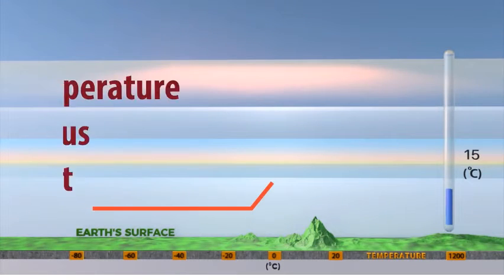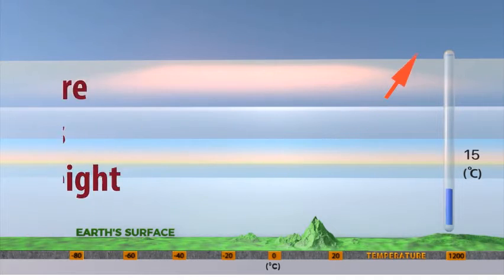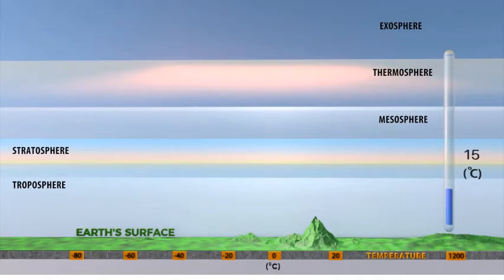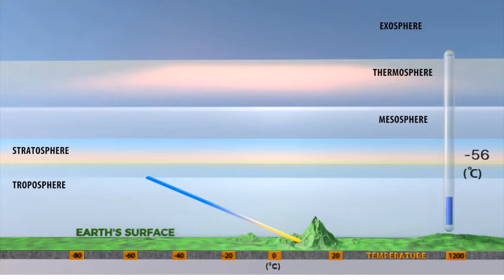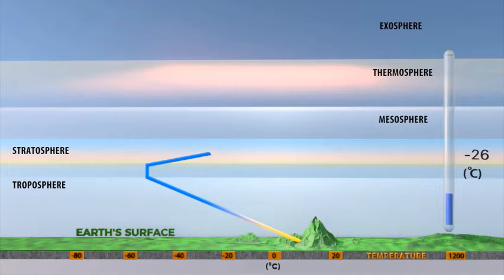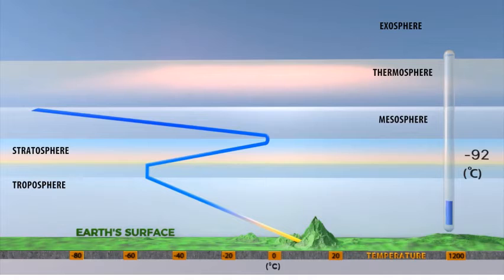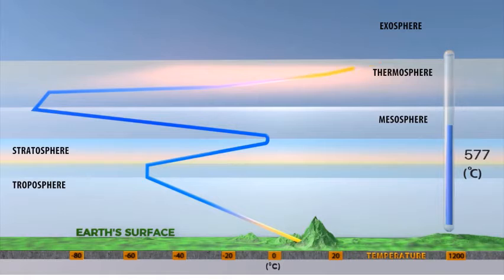We have temperature versus height. The temperature remains constant below the ozone layer. In the stratosphere region, from the ozone layer, the temperature progressively increases to negative 2 degrees Celsius. Then the temperature ranges from negative 2 degrees Celsius to negative 92 degrees Celsius at the upper boundary of the mesosphere. After that, the temperature rises from negative 92 degrees Celsius to 1,200 degrees Celsius near the upper boundary of our thermosphere.